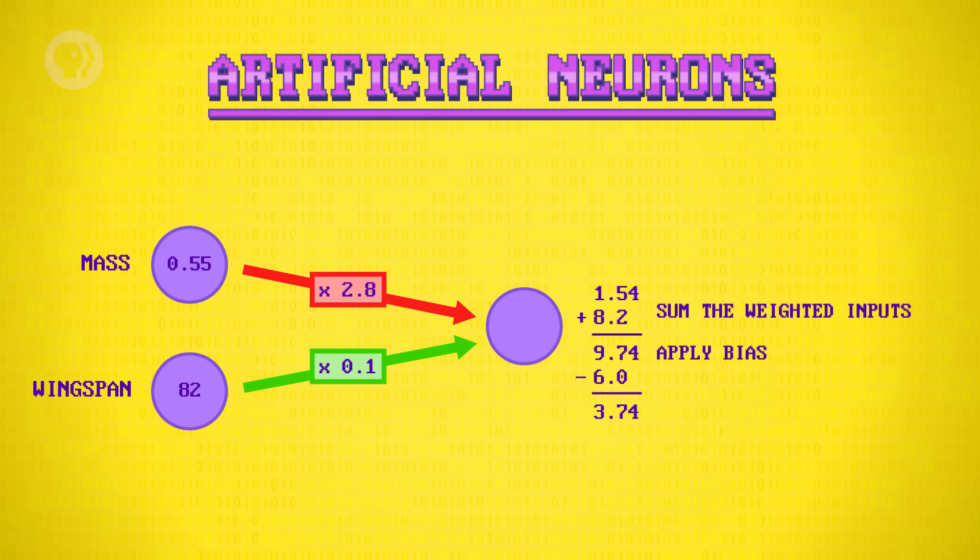These bias and inputs weights are initially set to random values when a neural network is created. Then an algorithm goes in and starts tweaking all those values to train the neural network, using labeled data for training and testing. This happens over many iterations, gradually improving accuracy, a process very much like human learning.